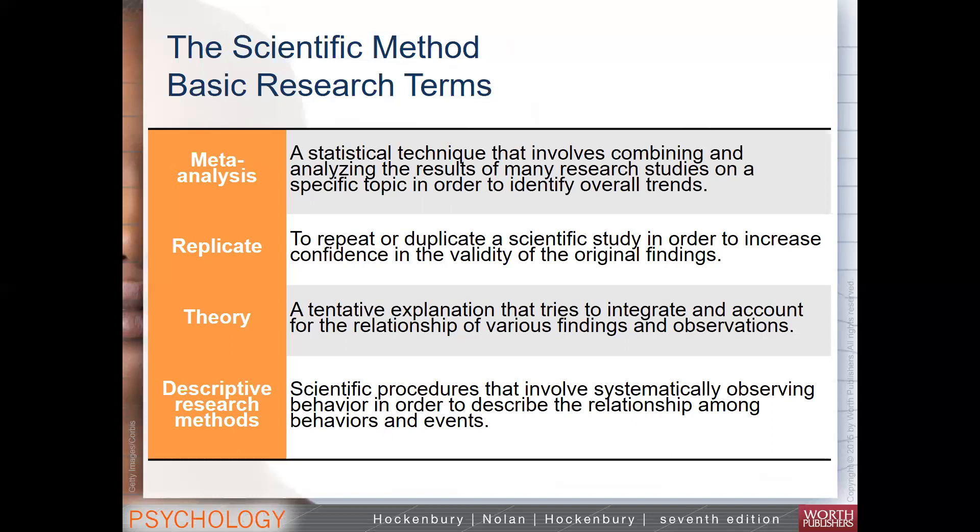We talked about a theory, which is a step up from a hypothesis. A hypothesis is basically a prediction, a guess, an answer to a problem based on observation or what we think might happen. Whereas a theory is actually rooted in findings and has evidence to support it. It's a tentative explanation, but it does integrate actual findings and observations that have been collected.